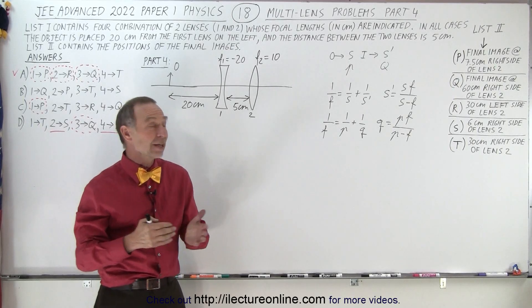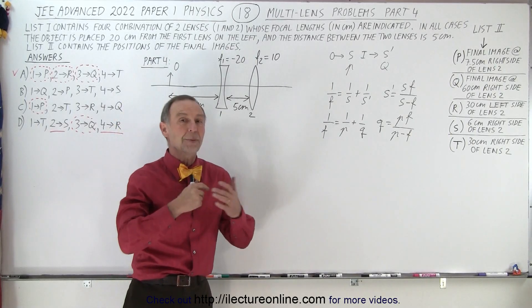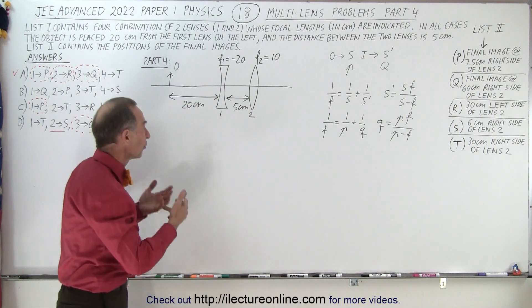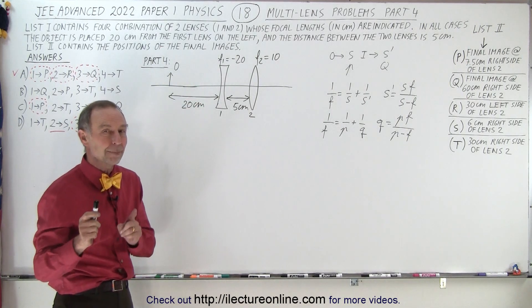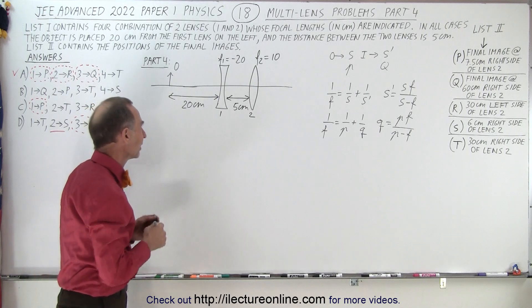Welcome to our lecture online. So now here's part four of problem number 18, the fourth double-lens combination. And again, we're trying to find the position of the final image.